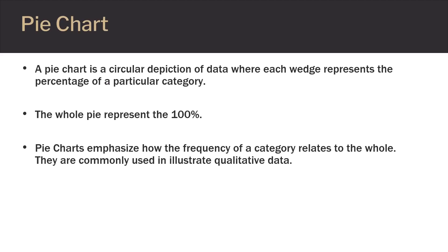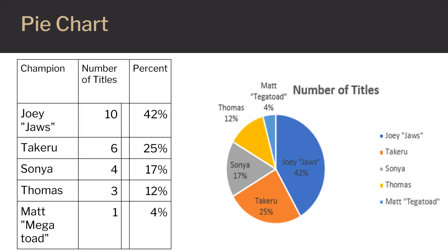A pie chart is a circular depiction of data where each wedge represents the relative frequency or percentage of a particular category, and the whole pie represents the total relative frequency of 100%. Pie charts emphasize how the frequency of a category relates to the whole. Pie charts are most commonly used to illustrate qualitative data, or data that is grouped into categories. Here's a pie chart that represents the data on the number of titles each of the champions won since 2015. The pie chart shows slices that are proportional to the percentage of each category. The percent is included on each slice to make it easier to read, and you can see just by glancing at the chart who had the most wins.